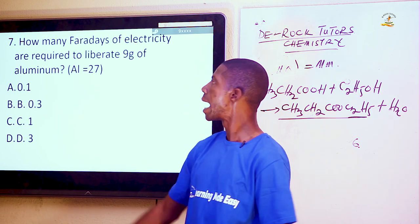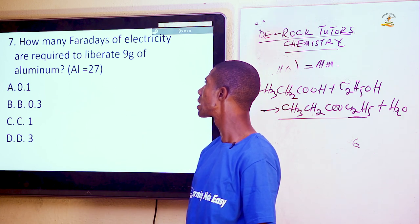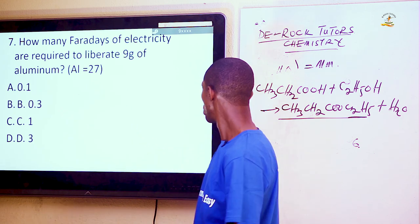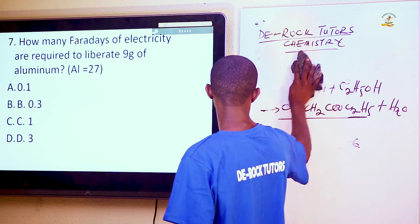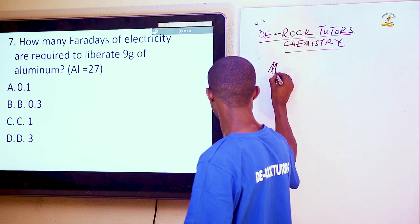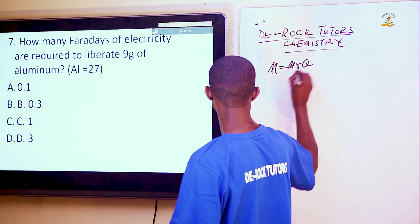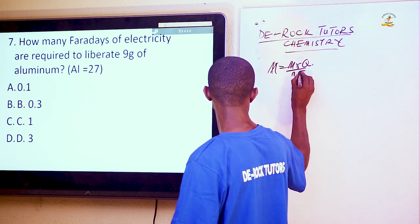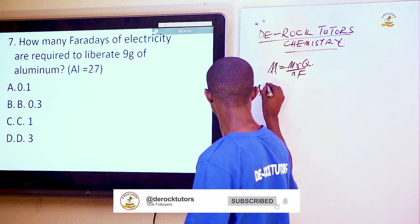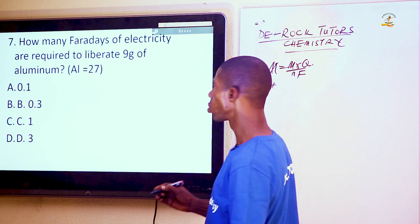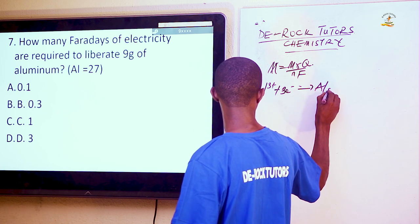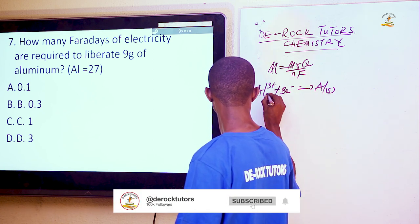Question 7: How many Faradays of electricity are required to liberate 9 grams of aluminium? The atomic mass of aluminium is 27. Using Faraday's first law, mass = (atomic mass × quantity of charge) / (number of electrons × Faraday constant). For aluminium with a charge of 3+, it takes 3 electrons to become the metal from its aqueous form.